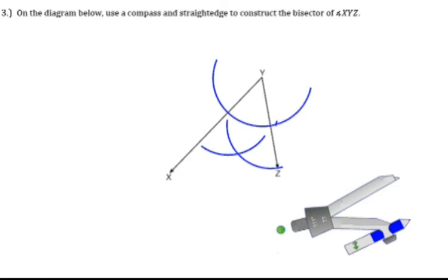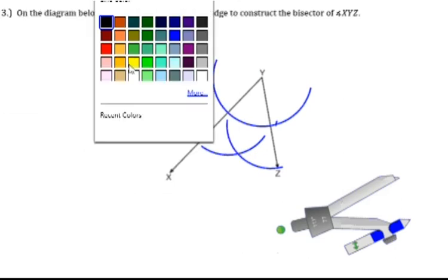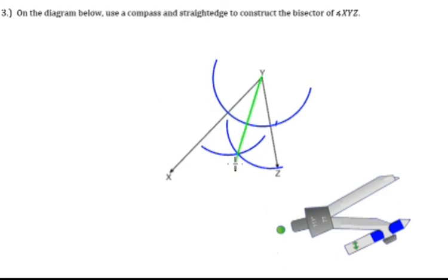Then just take your straight edge, and this time I just need a ray, so it should be that color green. And take your straight edge and go from the vertex Y through the intersection of these two arcs, and that's your angle bisector. You can see that it's split it in half.